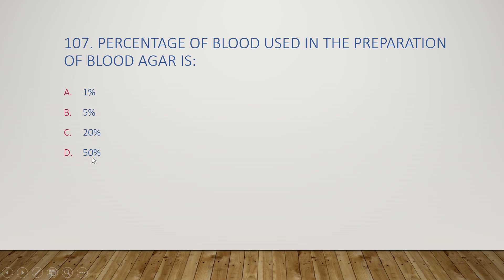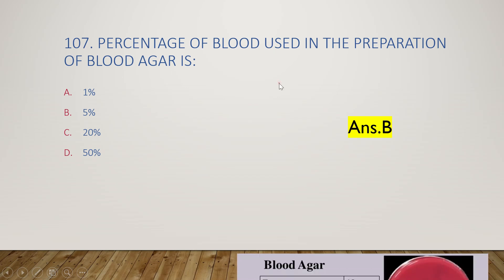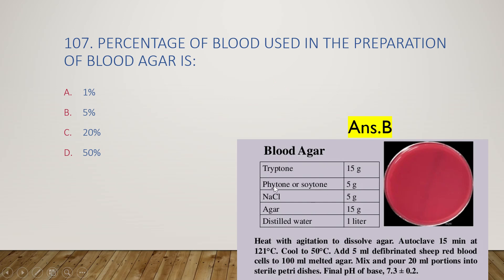Next question: the percentage of blood used in the preparation of blood agar is 1%, 5%, 20%, or 50%? The right answer is option B, 5%. The composition of blood agar includes tryptone, peptone or soytone, NaCl, agar, and distilled water. After autoclaving for 15 minutes at 121°C, cool to 50°C, then add 5 ml of defibrinated sheep red blood cells to 100 ml of melted agar, mix, and pour 20 ml into sterile Petri dishes.